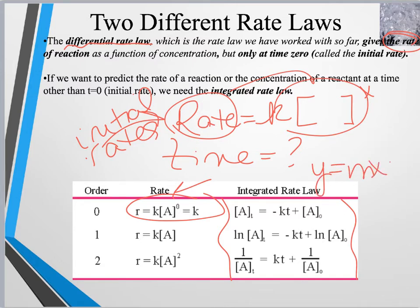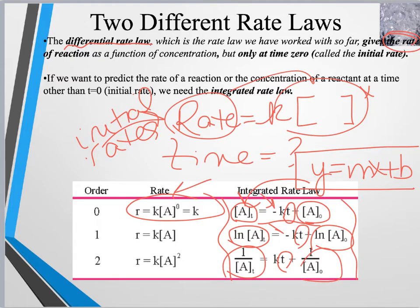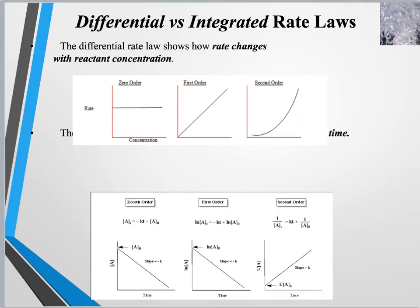The expression for a linear relationship is y equals mx plus b. If you look at the integrated rate laws they all have that form. What's on the left side of the equal sign appears on the y-axis if you were to graph the integrated rate law. On the x-axis is small t, which is time in all cases. The slope would be the rate constant, and there is a y-intercept. So there are a lot of graphs involved when we start working with integrated rate laws.